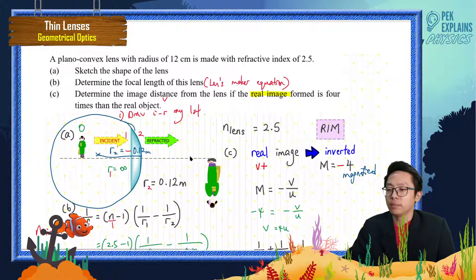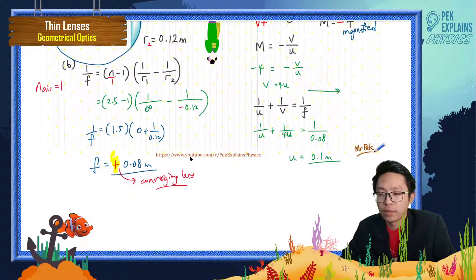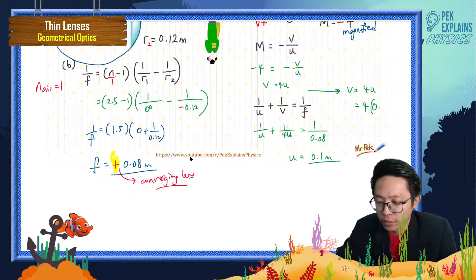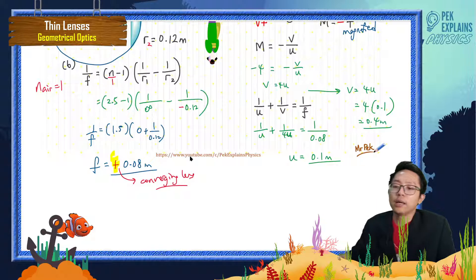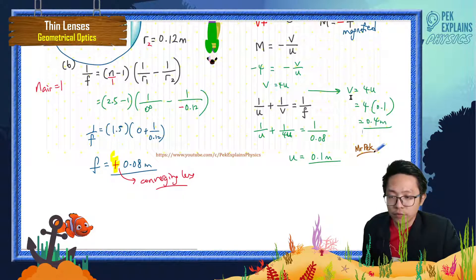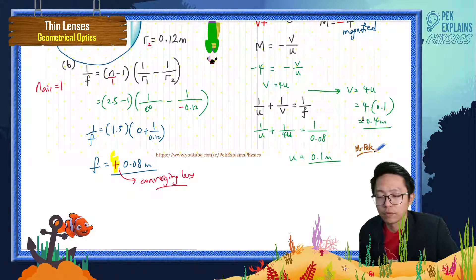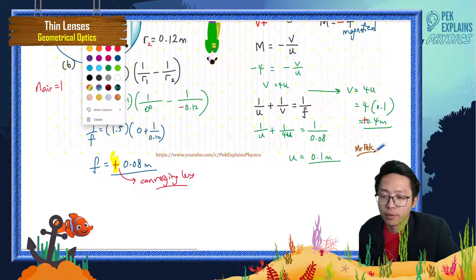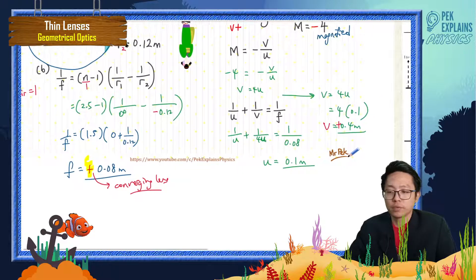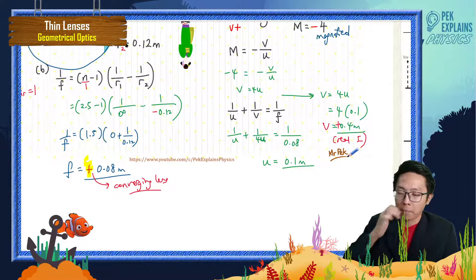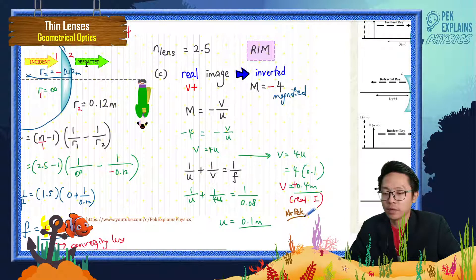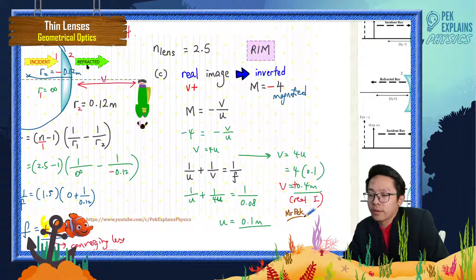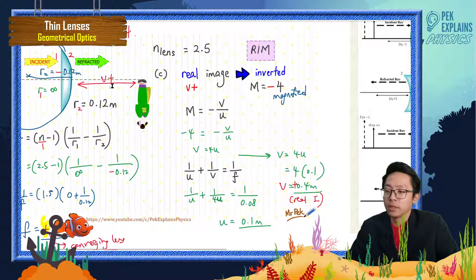Now the image distance v equals four times u, so v = 4 × 0.1 = 0.4 m. My v is positive, which means it's a real image. A positive v means the image is formed on the same side as the refracted ray — that confirms it's a real image.